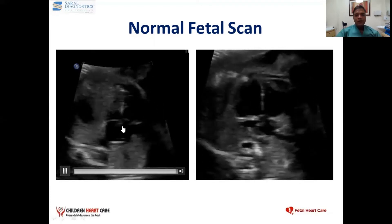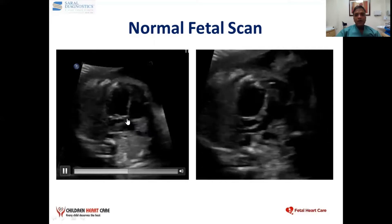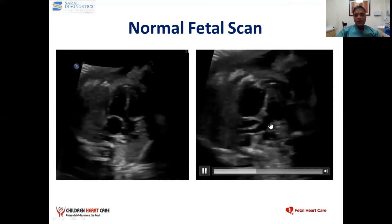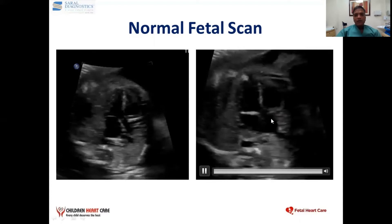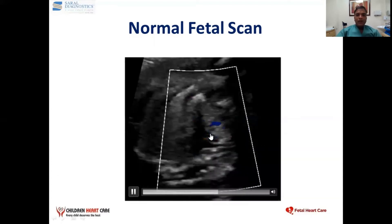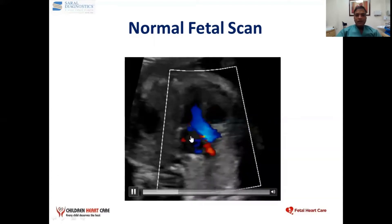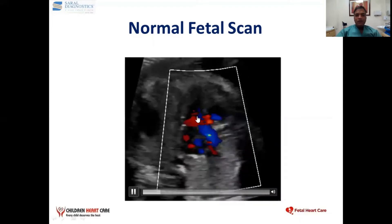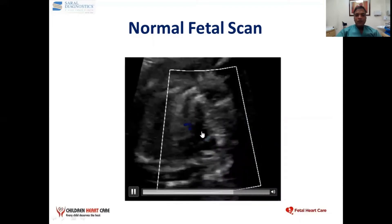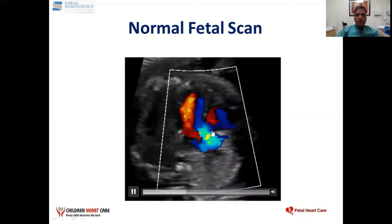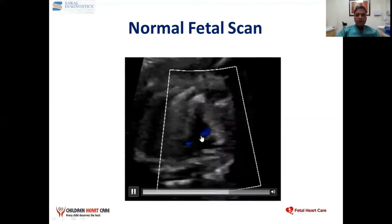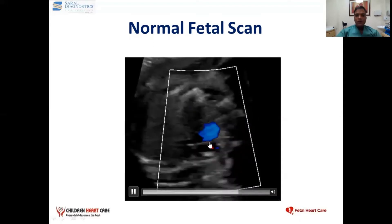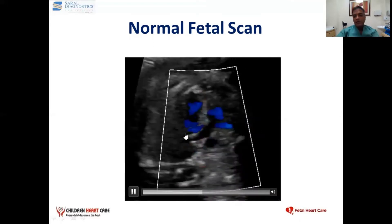There is an outflow from the left ventricle — this is the aorta. And from the right ventricle, another vessel that comes out is the pulmonary artery. As you can see in the color flow, the left atrium is going into the left ventricle with the red flow, and the outflow is in blue because the flow is away from the probe. This is the pulmonary artery. So the aorta and pulmonary artery are both crossing — one is going like this, another is going like this.